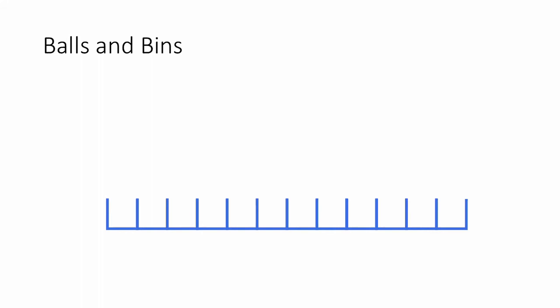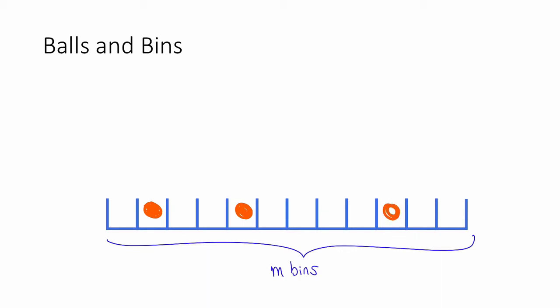So here's the basic setup. We have m bins, and we're going to toss n balls into these bins uniformly at random. For example, maybe the first ball lands here, the second one lands here, the third one's over here, the fourth one lands in the same bin that the second one did, and so on. We might want to ask questions like: how many empty bins are there? What's the fullest bin? Or how many balls do we have to throw before we hit all of the bins? This last one is actually the coupon collector's problem from a previous video.